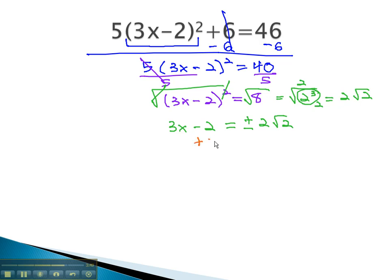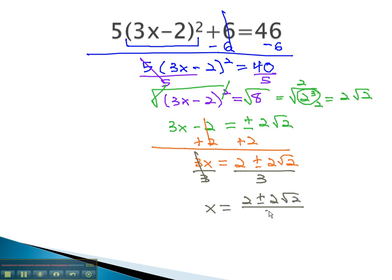We can continue solving by adding 2 to both sides, giving us 3x = 2 ± 2√2, and then finally get our solution by dividing both sides by 3. We get x = (2 ± 2√2) / 3.